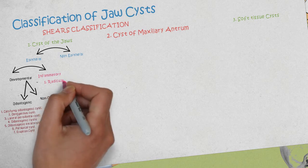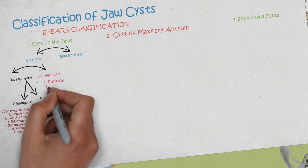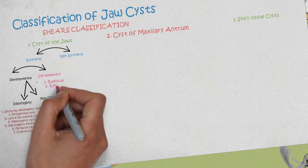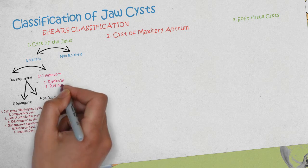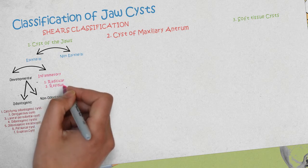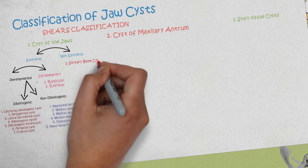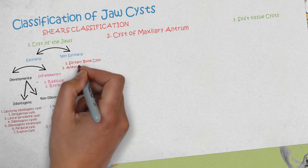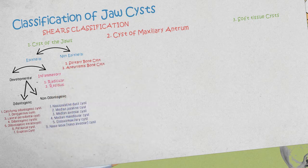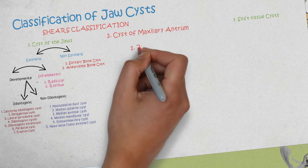The inflammatory cysts comprise the radicular cyst and the residual cyst. The cysts in the non-epithelial component include the solitary bone cyst and the aneurysmal bone cyst.